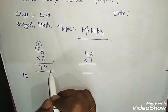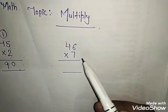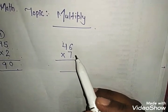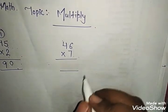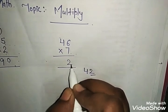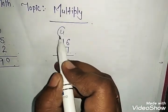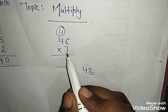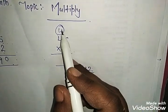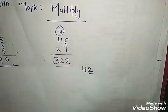The answer is 90. Next example: 46 multiply 7. 7 times 6 is 42. Write 2 here and 4 is carry. 7 times 4 is 28. 28 and 4 is 32. The answer is 322.